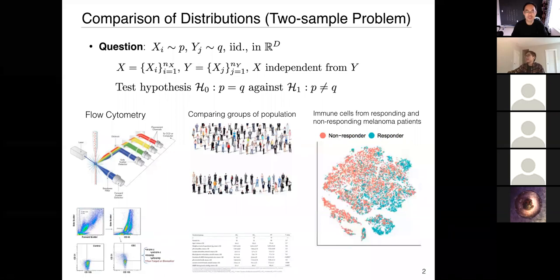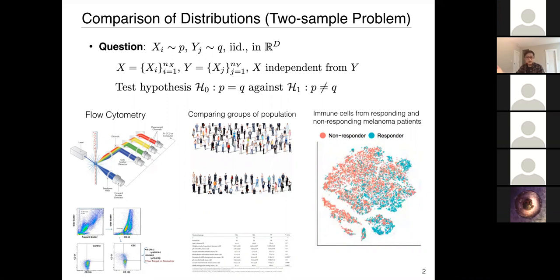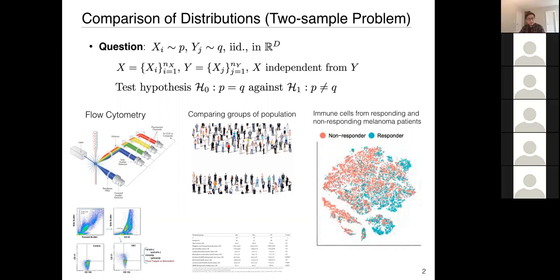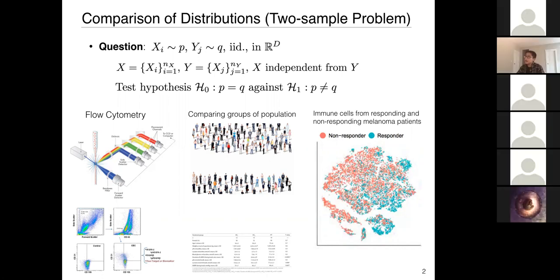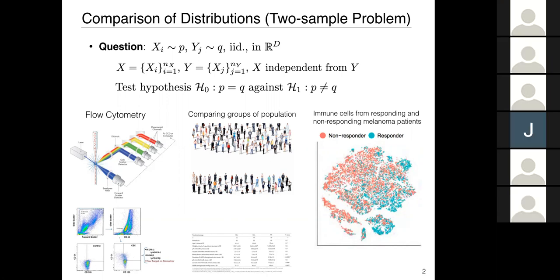Let me start from an overview of the problem. In our traditional statistical literature this is called the two-sample problem — essentially trying to compare two distributions. In a simple setting you have i.i.d. samples from them: X is a finite sample drawn from distribution P, and Y is a finite sample drawn from distribution Q. The two are independent, and the data can be in multivariate or high dimension where P and Q are generally not known. The question is how to compare them — quantitatively, how the density P is different from Q.